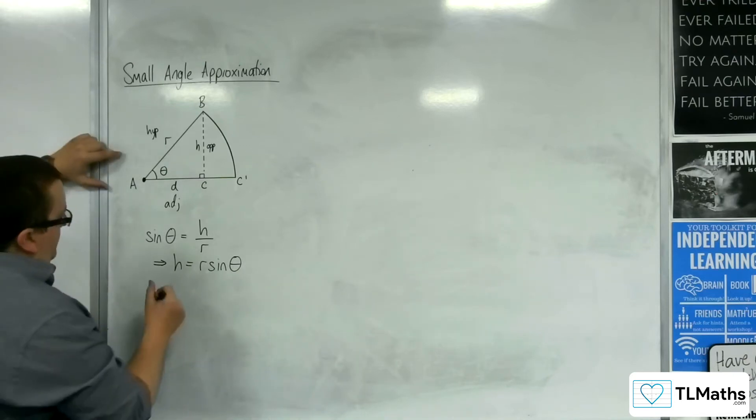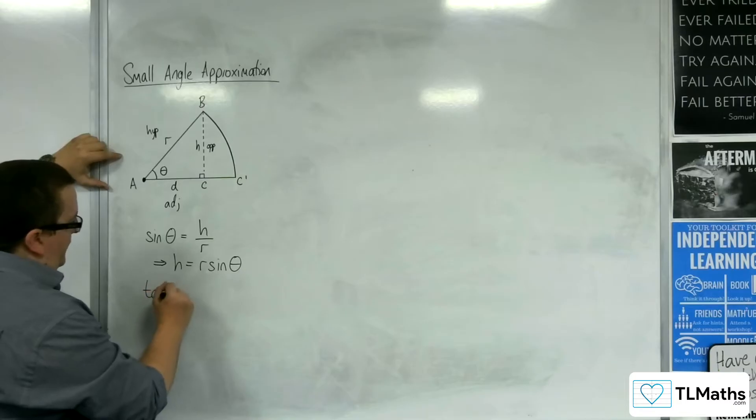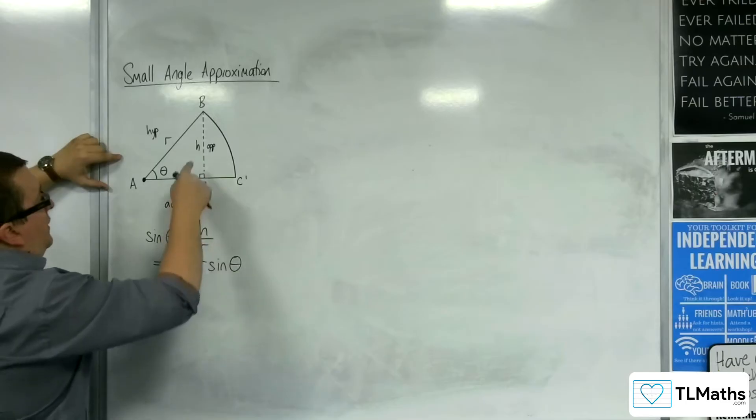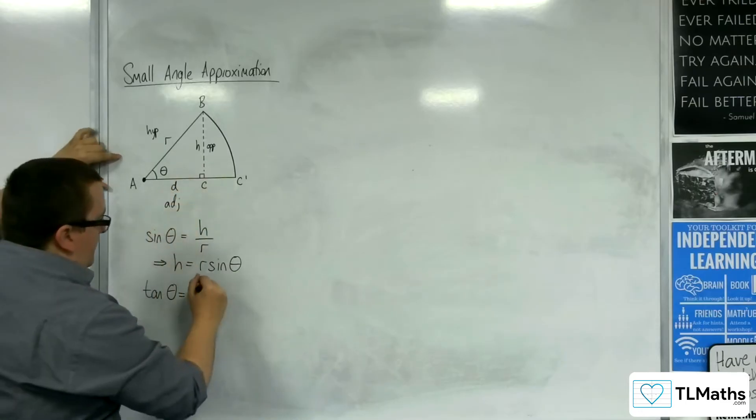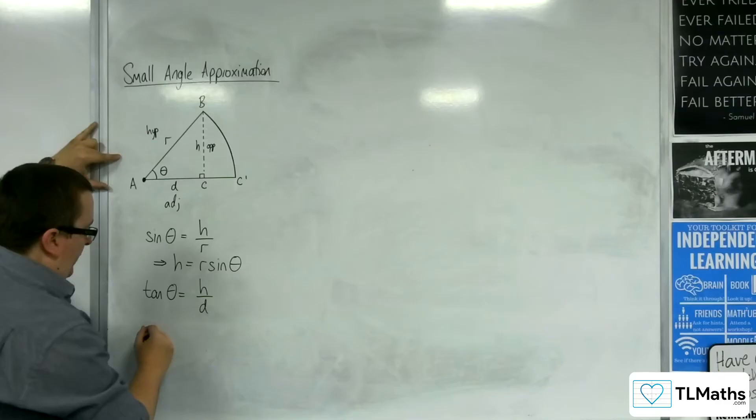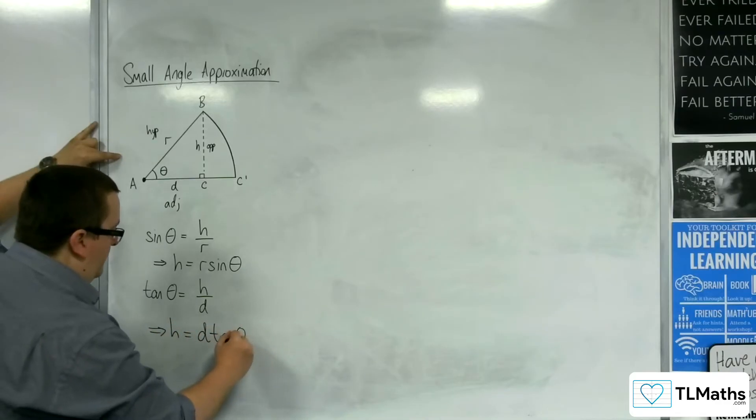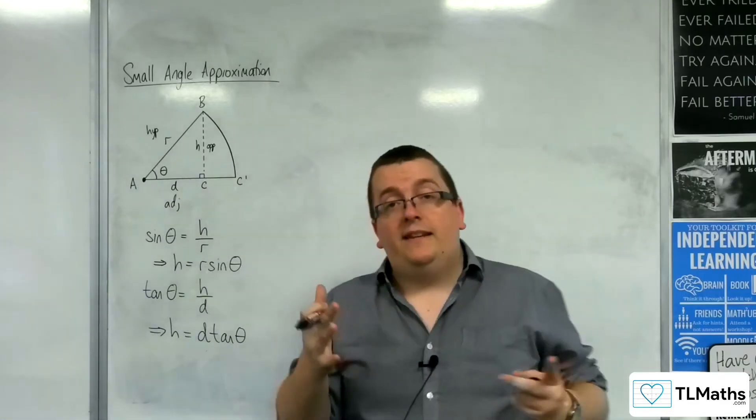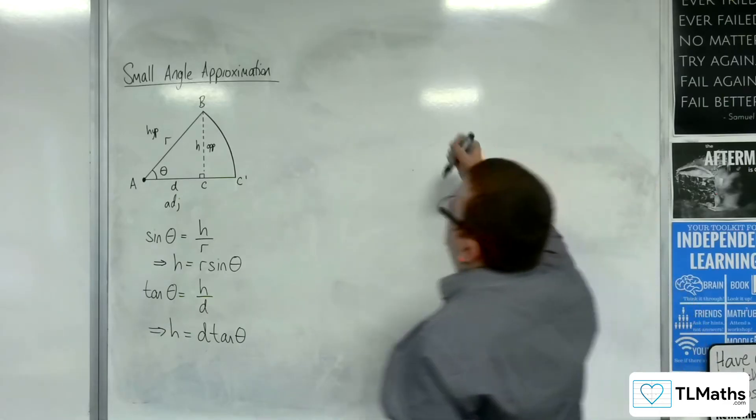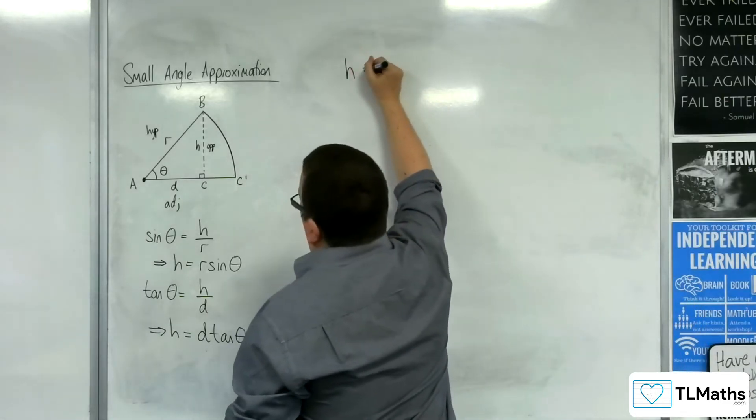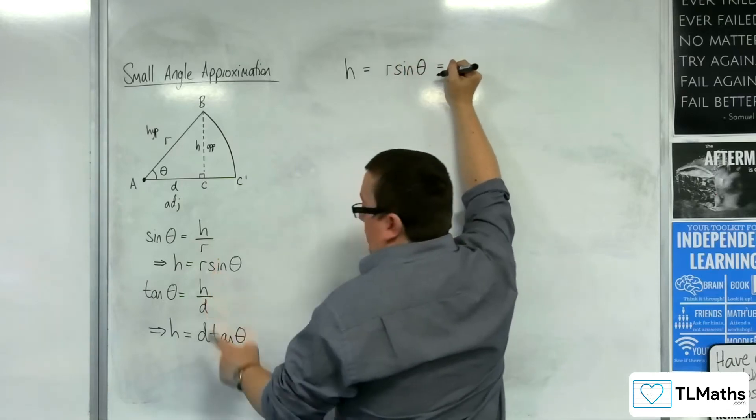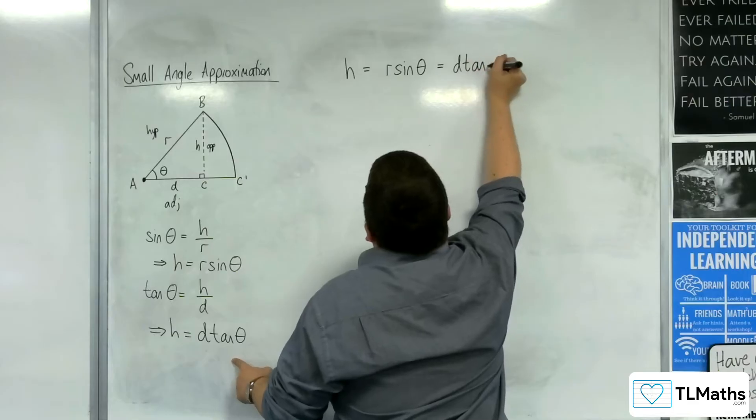Now I can also say that tan of the angle is equal to the opposite over the adjacent, so that would be H over D. So I would be able to say that H is equal to D lots of tan theta. So I now have two ways of writing down H. H is equal to R sine theta, which is the same as D tan theta from my diagram.